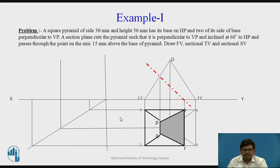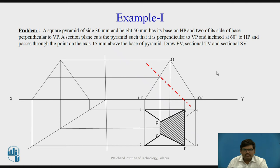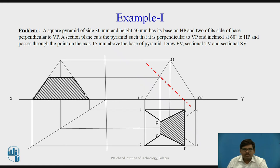We project each and every point from the top view and from the front view into the side view — the apex point and the base points. We join these points. Now wherever the cutting plane cuts — at O1' and O2' — those points are projected. The cutting points on the vertical edges and base are located and joined. We name these as P', Q', R', and S'. So this is the complete projection of the given square pyramid.